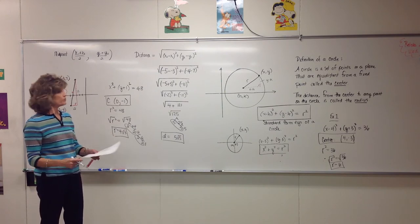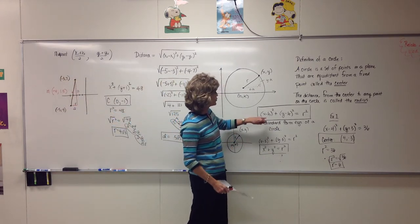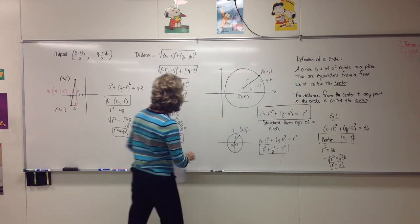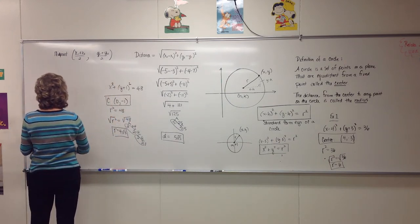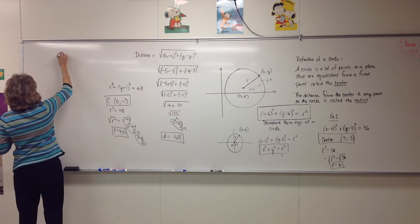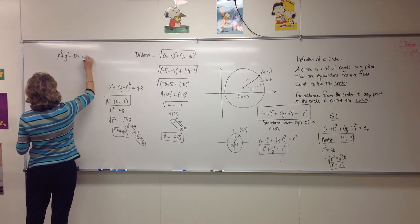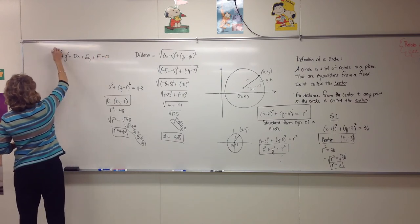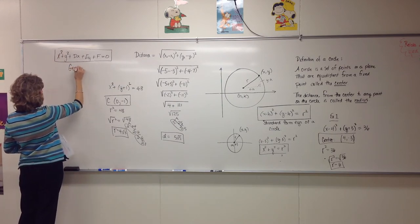Sometimes an equation is not going to be given to you in standard form. Sometimes it might be given in what we call general form. The general form of the equation of a circle looks like this: x squared plus y squared plus d times x plus e times y plus f equals 0. When everything is on one side and it equals 0, it's in general form.